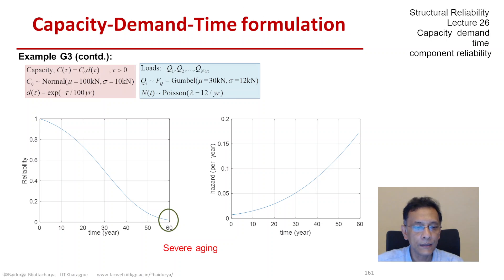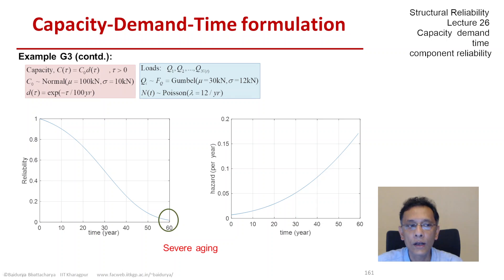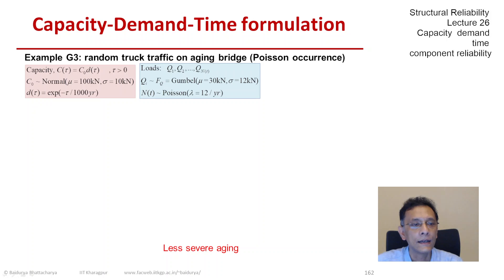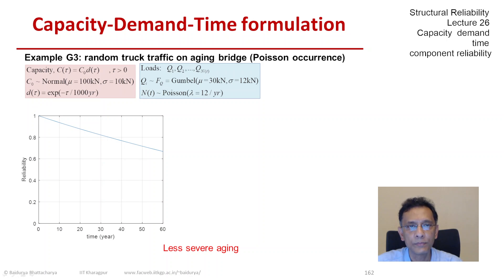Now let's compare these results with some cases where aging is different. Here aging is given by exponential minus tau over 100 with tau in years. If we have a less severe aging in the form of exponential minus tau over 1000 — a much more benign situation — and we plot the reliability function, we are pretty close to the no-aging case. At the end of 60 years, the reliability is close to 70 percent, compared to something like 72 percent in case 3B.